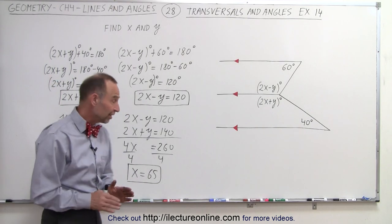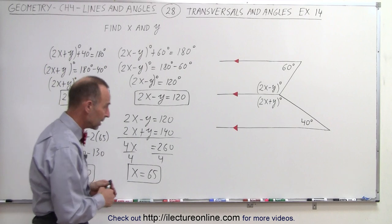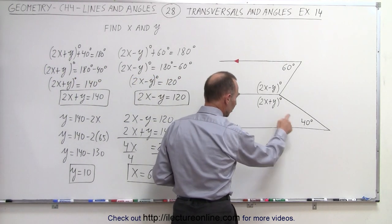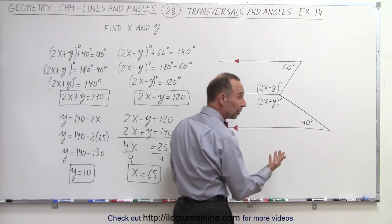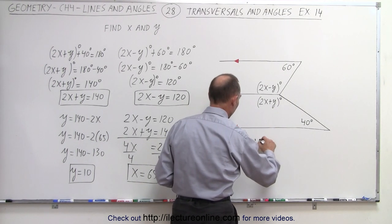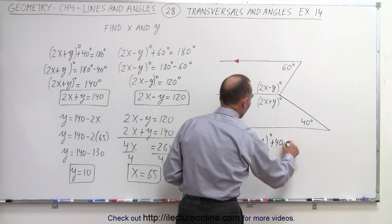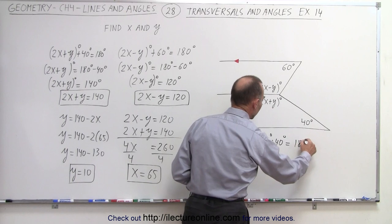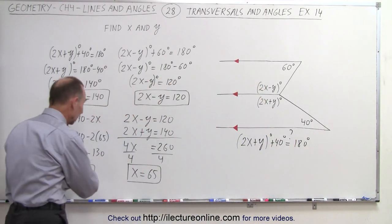Now let's check to see if these answers are indeed correct. So what we're going to do is we're going to take this angle right here, add it to this angle, since they are what we call consecutive interior angles. They must add up to 180 degrees, which means that 2 times x plus y in degrees plus 40 degrees must equal 180 degrees if we did this correctly when we plug in the values for x and y.